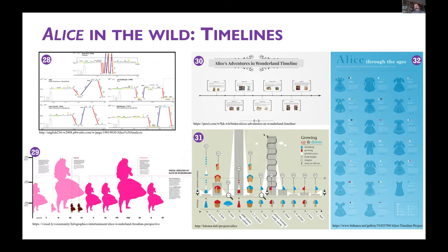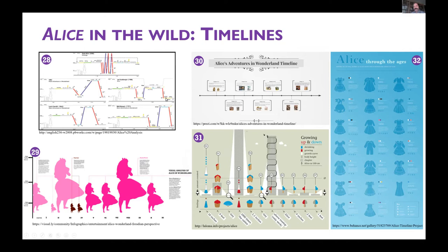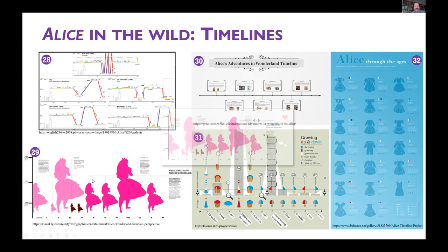Moving outside research universities, there are lots of examples of people doing things in the wild. This slide shows people extracting data from the text — for example, we know Alice shrinks and grows, so you can collect that as data and plot it as a line chart. There are timelines and height charts; I like this one in particular, which shows chapters across the bottom and the height of Alice along the side with different-sized Alices corresponding to her height. The quantitative data is combined with commentary — a Freudian analysis of size as a metaphor for Alice's adolescent transition between childhood and adulthood. That's a really interesting juxtaposition between quantitative numeric data and critical analysis combined into one chart.